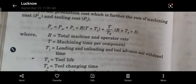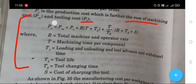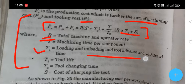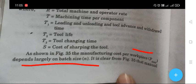The production cost P_C equals machining cost P_M plus tooling cost P_T. P_C = R(T + T1 + T2·T/T2) + R·T3 + S, where R is the total machine and operator rate, T is machining time per component, T1 is loading and unloading time, T2 is tool life, T3 is tool changing time, and S is the cost of sharpening the tool.